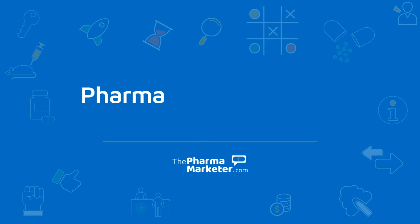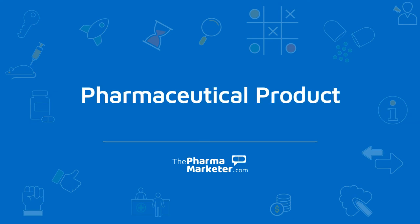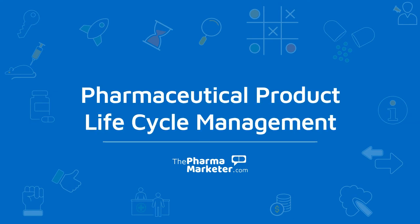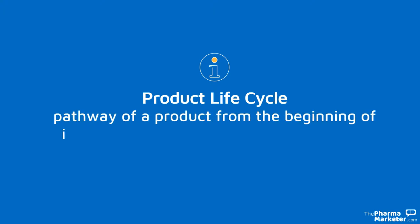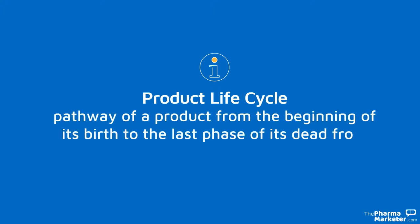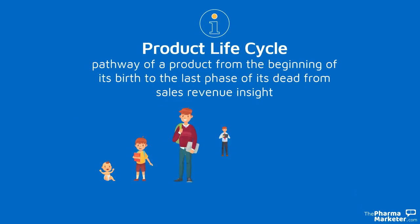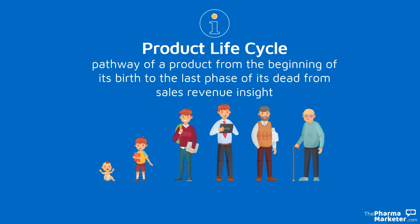In this video we will discuss the life cycle management strategies of pharmaceutical products. The product life cycle is defined as the pathway of a product from the beginning of its birth to the last phase of its death from sales revenue in sight. The stages of the product life cycle are similar to those of humans.